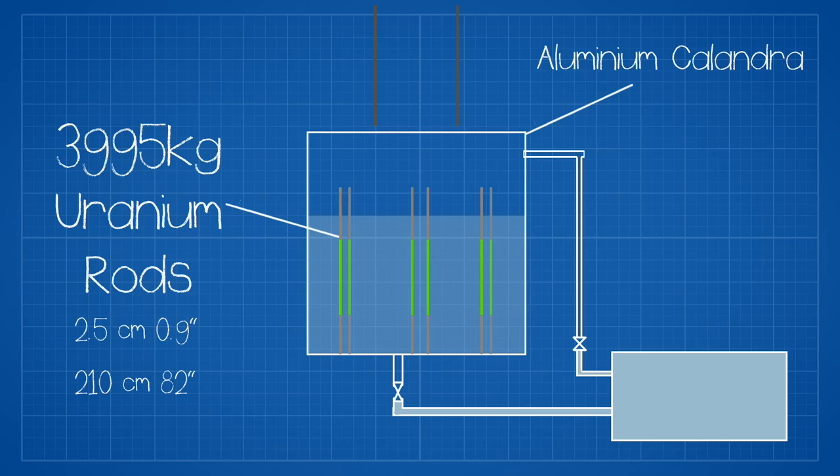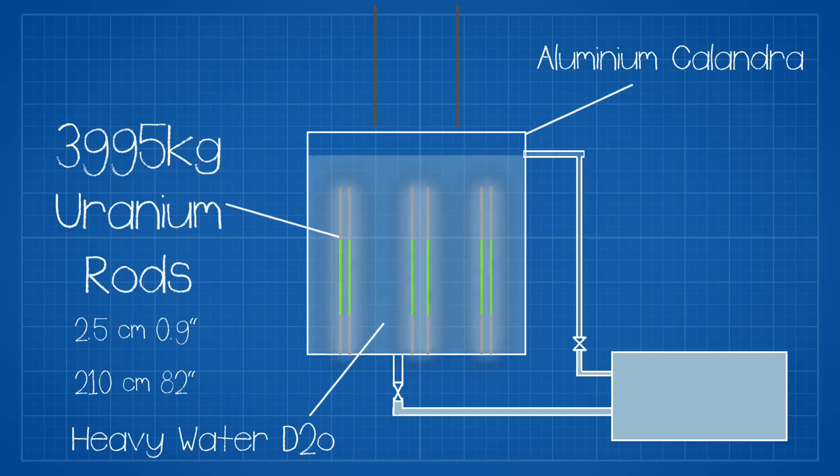One end of each fuel rod rested on the bottom of the aluminium tank. The assembly used heavy water as a moderator of the neutrons created during chain reaction. Interestingly, instead of control rods, the system made use of the level of the water in the tank to control the reactor.